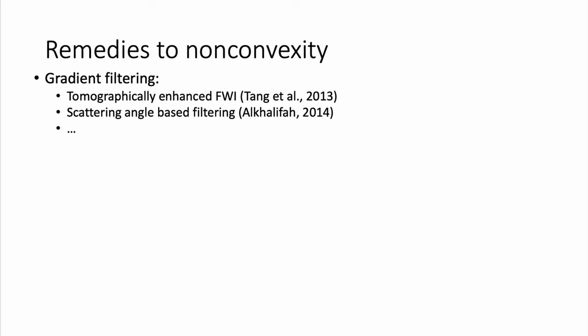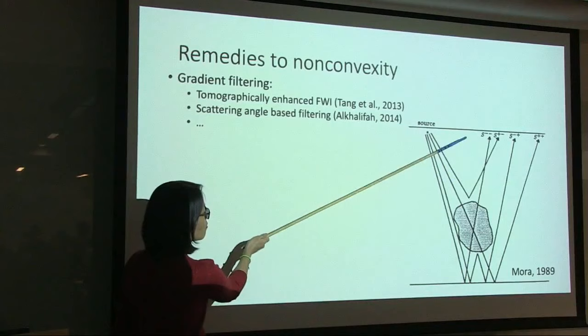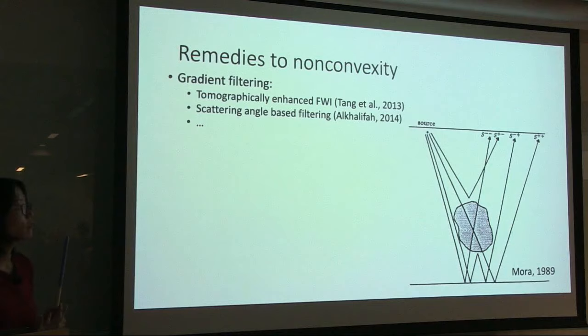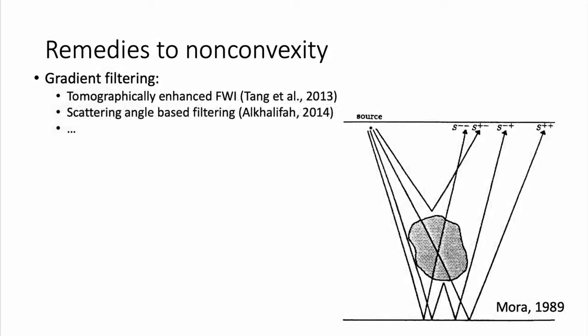A third remedy is that FWI has both tomographic and reflection components — the low wave number component can be separated. People have designed filters to enhance the low-frequency tomographic component relative to the reflection component. Peter Mora back in 1989 proposed that for reflection geometry, velocity anomalies are transmitted by reflections from below, so filtering updates in the up-and-down direction extracts the low wave number information needed. However, this method also suffers from cycle skipping if you start too far from the true model.